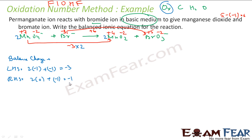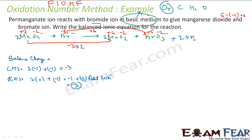Since this is basic medium, we add OH⁻. We cannot add OH⁻ to the LHS because it would make the charge more negative. Adding to the RHS: we add 2 OH⁻ to the right-hand side. This makes the RHS charge minus 3, which balances the LHS charge of minus 3. Charge is now balanced.